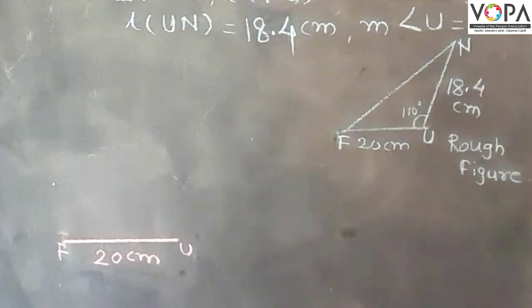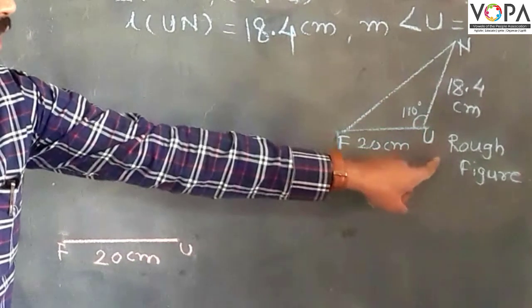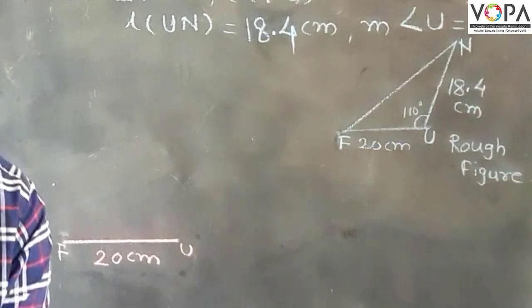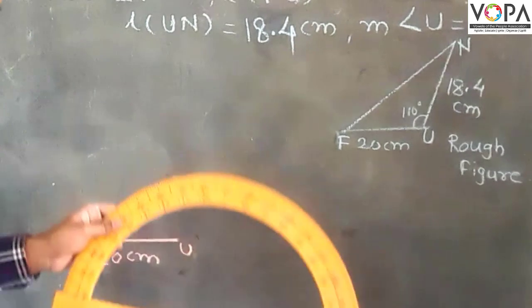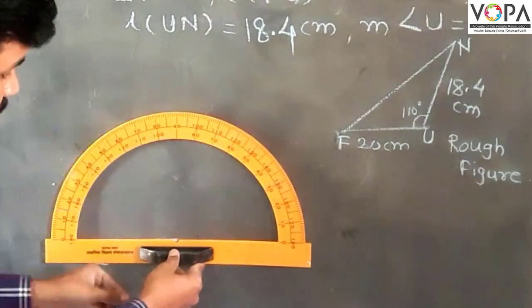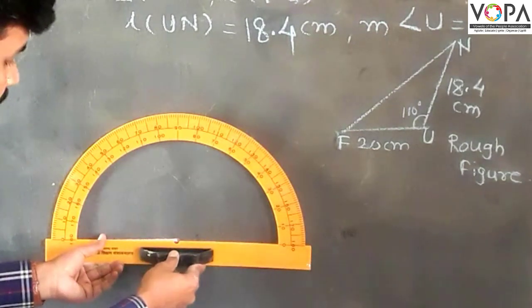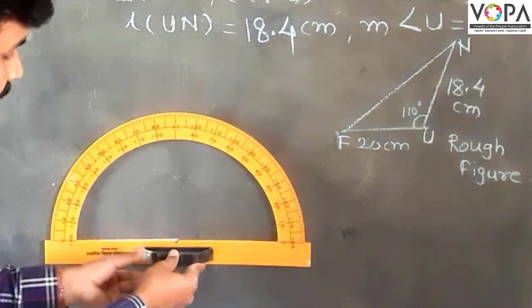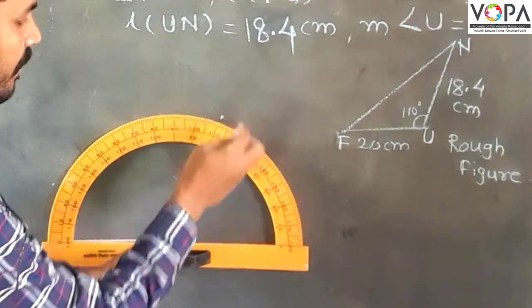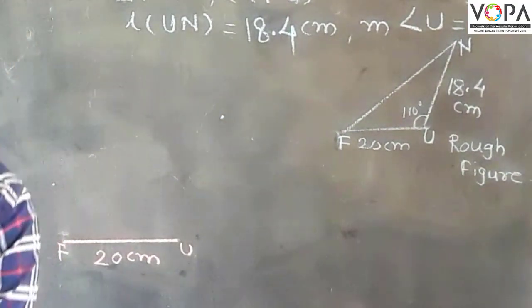After that, angle U is 110 degrees. So put the protractor on the U point, on vertex U, and get the 110 degrees. So here is the 110 degrees.